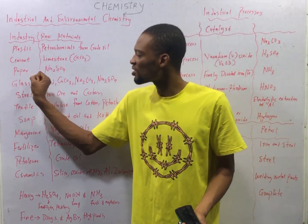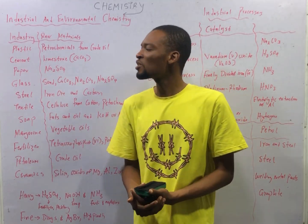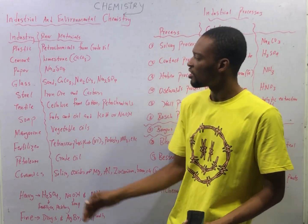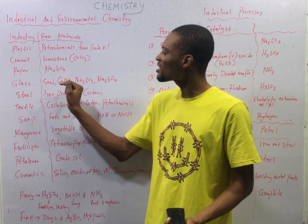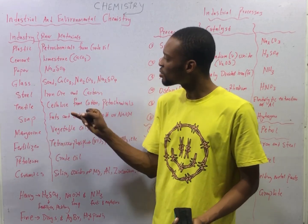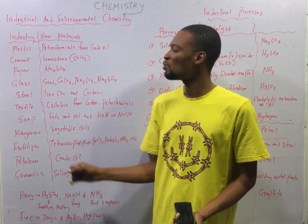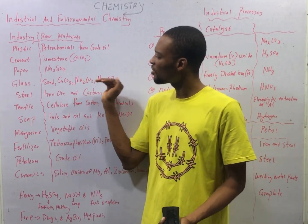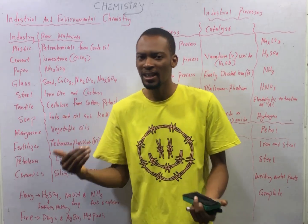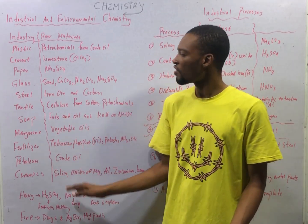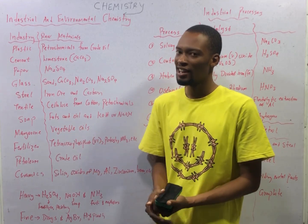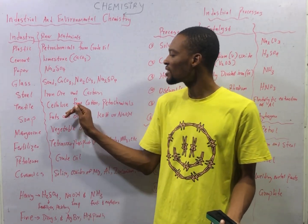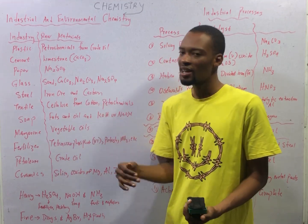In the paper industry, Na₂SO₄ (sodium sulfate) is a major raw material. In the glass industry, we need sand, limestone (calcium carbonate), sodium carbonate, and sodium tetraborate sulfate. These are the raw materials needed in the glass industry. For the steel industry, we need iron ore and carbon. For the textile industry, we need cellulose from cotton and petrochemicals.